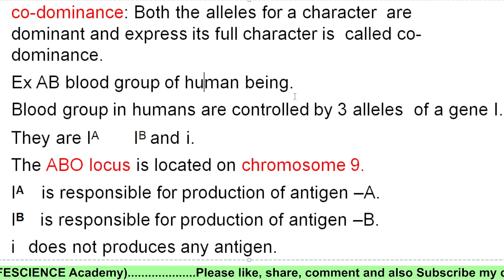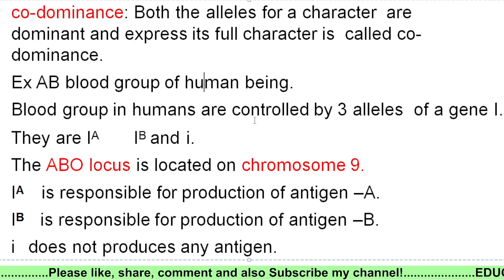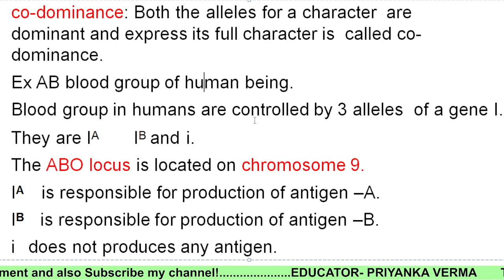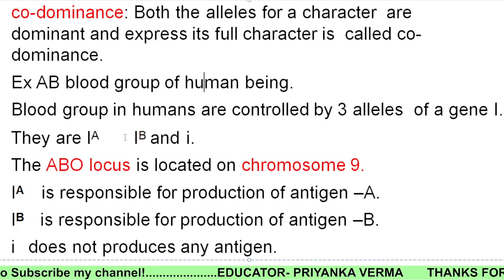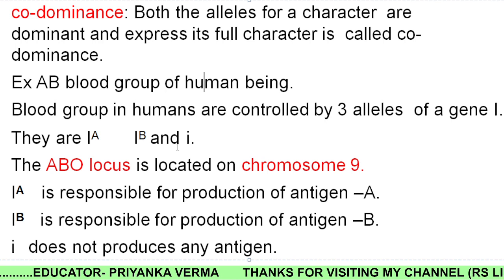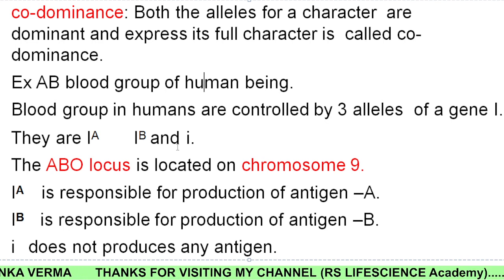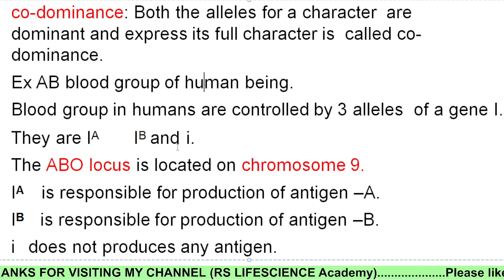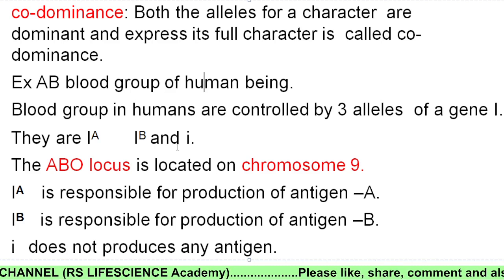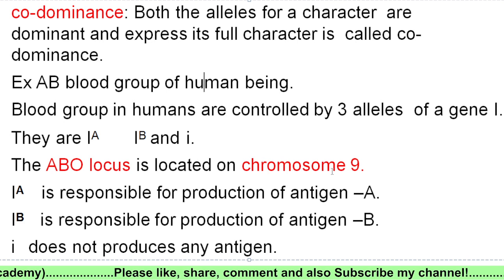We have to learn the ABO blood group system. Blood groups in humans are controlled by three alleles of a gene I. One is Iᴬ, one is Iᴮ, and small i. We have three types of alleles, and these decide which blood group we have. This depends on what our parents' blood group was. The ABO blood group system is located on chromosome number 9.